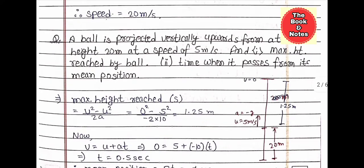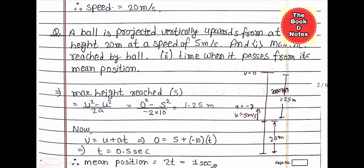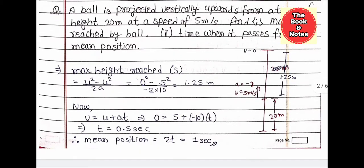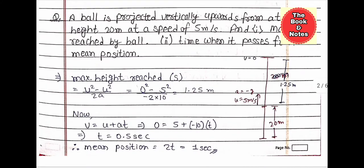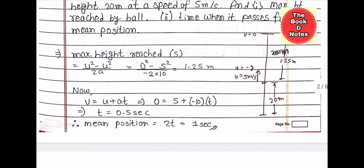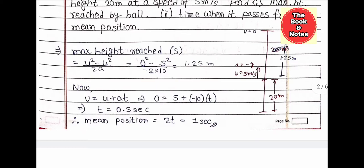Next question: a ball is projected vertically upward from a tower of height 20 meters at a speed of 5 meters per second. Find (1) the maximum height reached by the ball and (2) the time when it passes from its mean position. The maximum height reached is 1.25 meters and the time when it passes the mean position is 1 second.